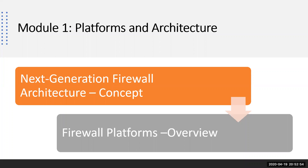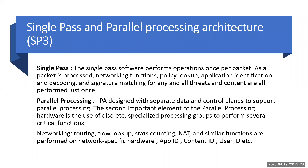Let's discuss the next module: platform and architecture. Here we are going to discuss next generation firewall architecture concepts and the firewall platform. In the firewall platform, we'll see all the models as well as PAN-OS — Palo Alto's operating system. For the next generation firewall architecture, we'll discuss single pass processing, which performs operations once per packet: networking functions, routing, flow lookup, stats counting, NAT, and all those functions. It performs operations based on specific hardware — App ID, Content ID, User ID — and does parallel processing of both data plane traffic and management plane traffic.